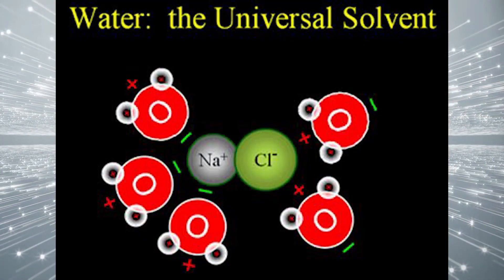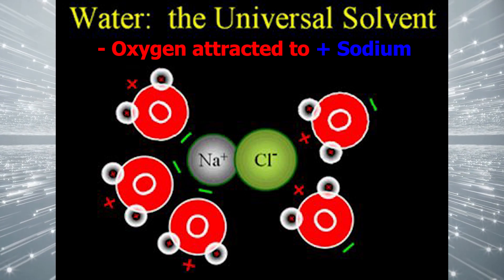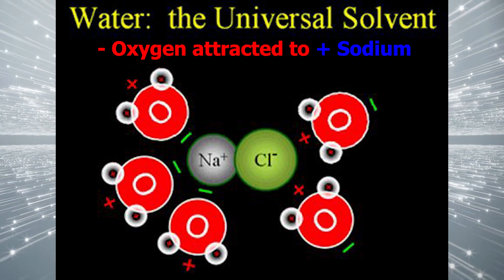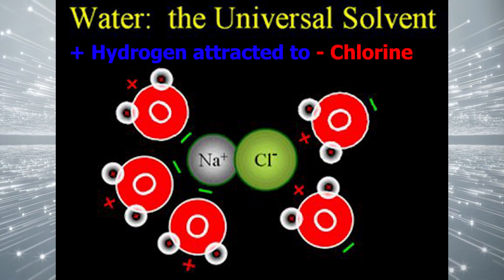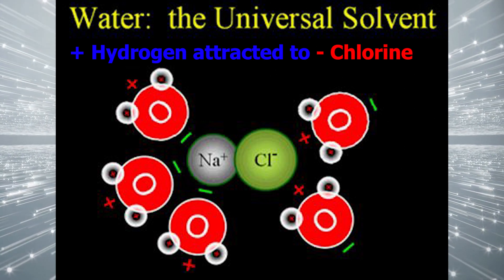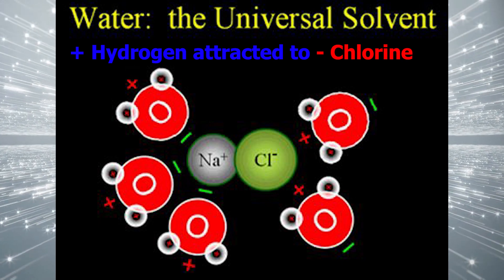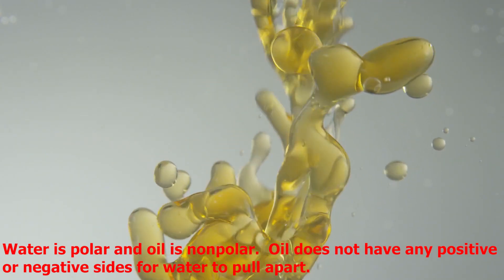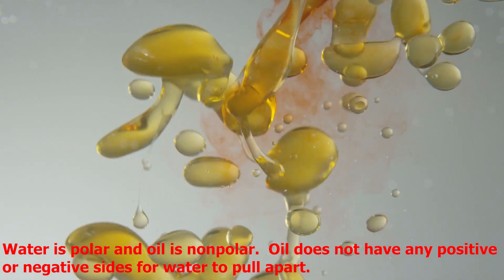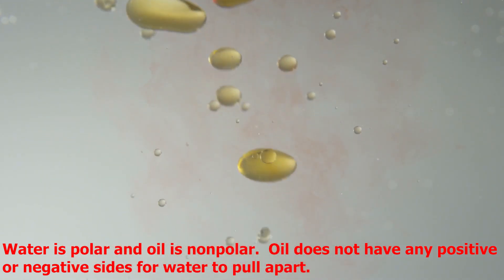Wherever water goes, either through the ground or through our bodies, it takes along valuable chemicals, minerals, and nutrients. This happens because when a substance interacts with water, the negative oxygen atoms are attracted to the positive atoms of that substance, and the positive hydrogen atoms are attracted to the negative atoms of that substance — so water literally separates the positive and negative ends of that substance. This also explains why oil and water don't mix: oil is non-polar and therefore has no positive and negative sides for water to pull apart.